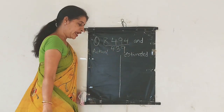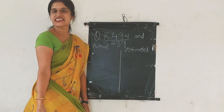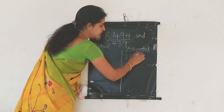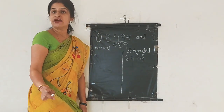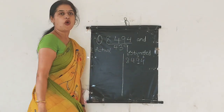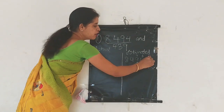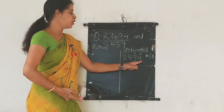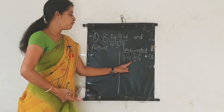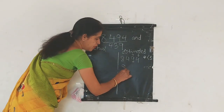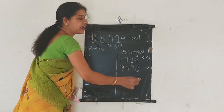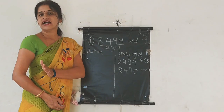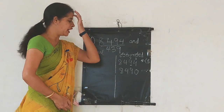Let's take 8,494. What will be its nearest 10? In the ones place we have 4, and in the tens place we have 9. When we estimate to the nearest 10, we look at the ones place. The ones place is 4, which is less than 5. So when it is less than 5, we put a 0 at the ones place. So 8,494 becomes 8,490. In other words, 94 is nearer to 90 than to 100. So 8,494 rounds off to 8,490.